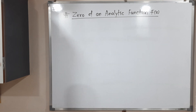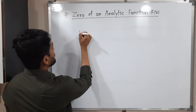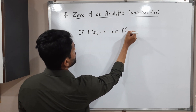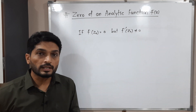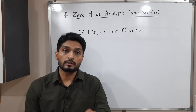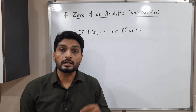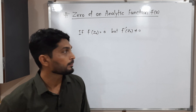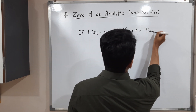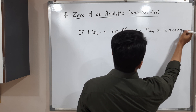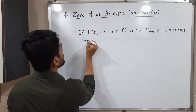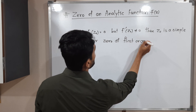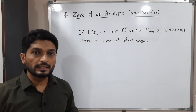Now let us see how to find the order of a zero. If f of z-naught is 0, but f-dash of z-naught is not equal to 0 — that is, if you put z equal to z-naught in the function its value is 0, but putting the same value in the derivative gives a non-zero result — then we say it is a zero of order 1. Then z-naught is a simple zero, or zero of first order.